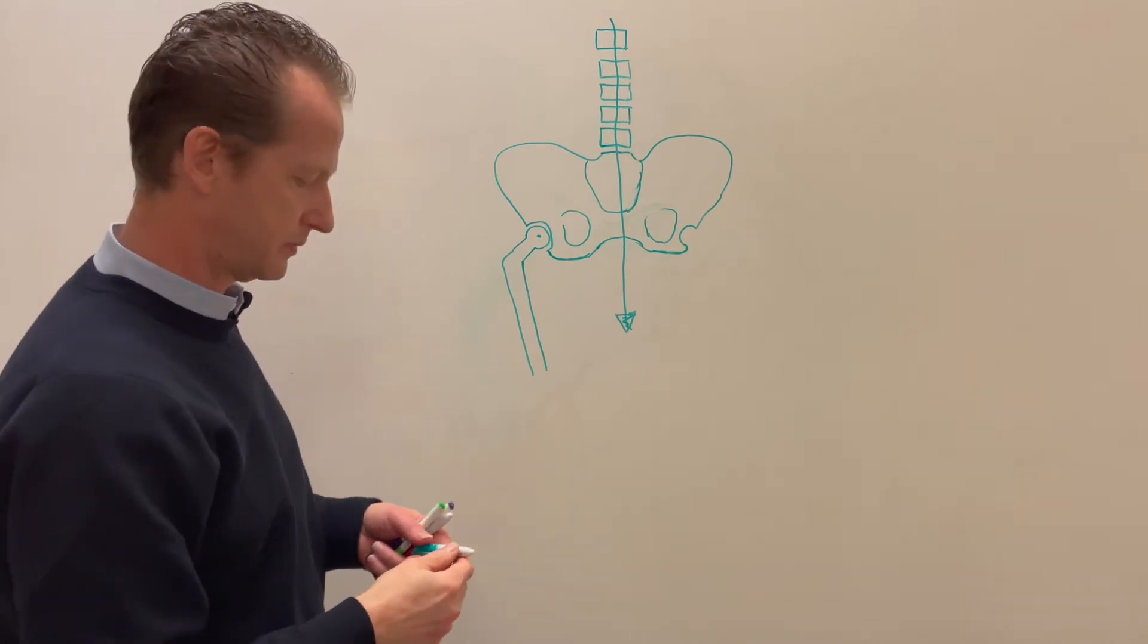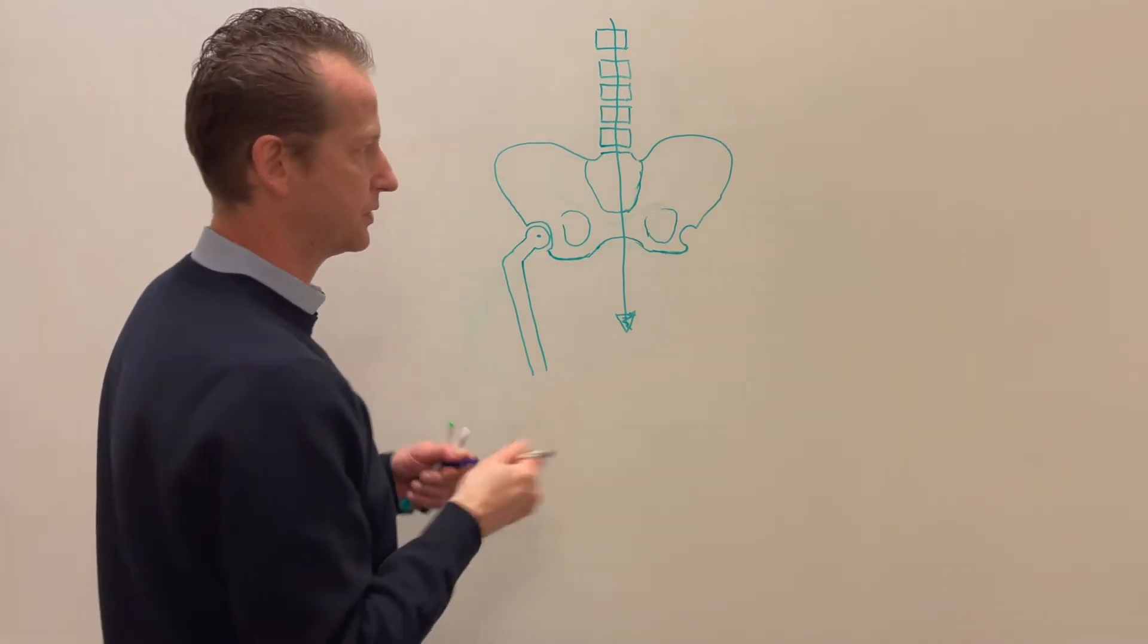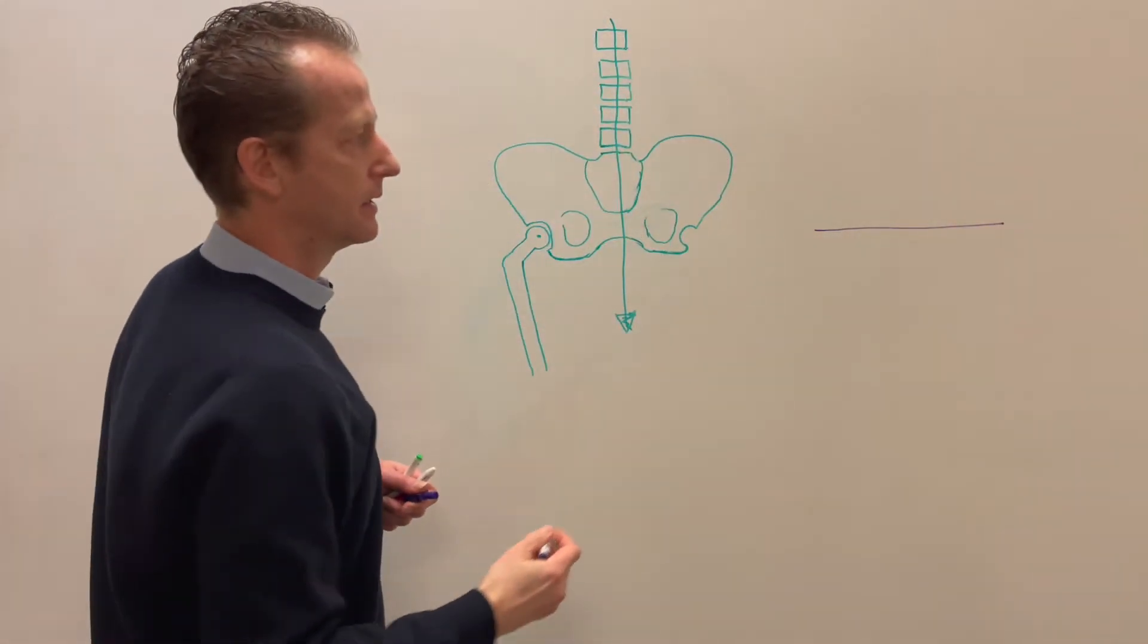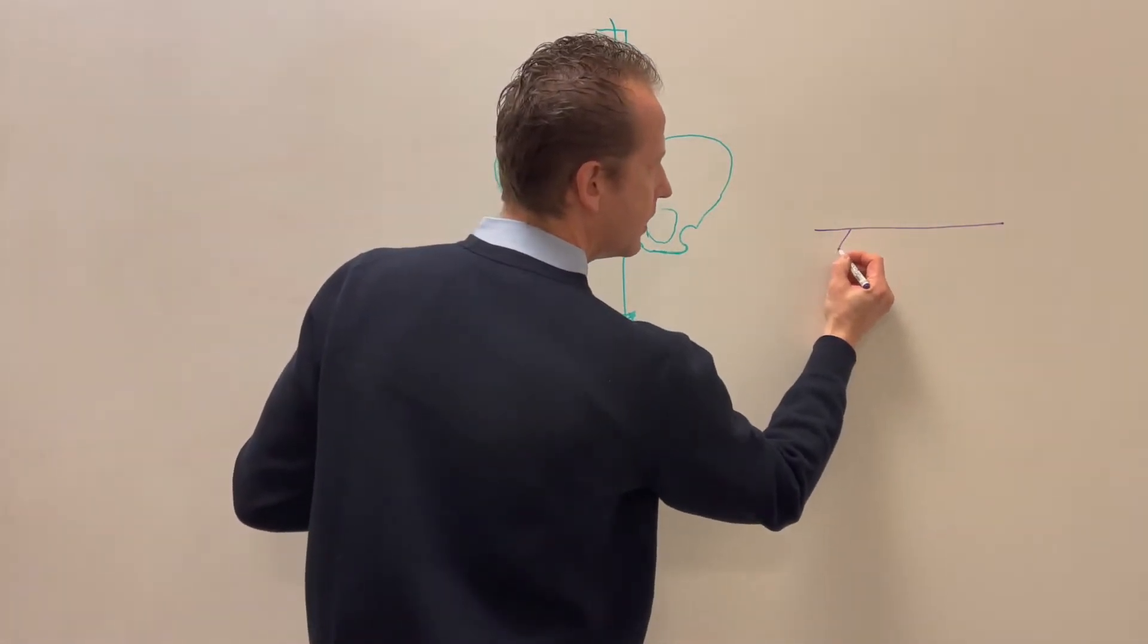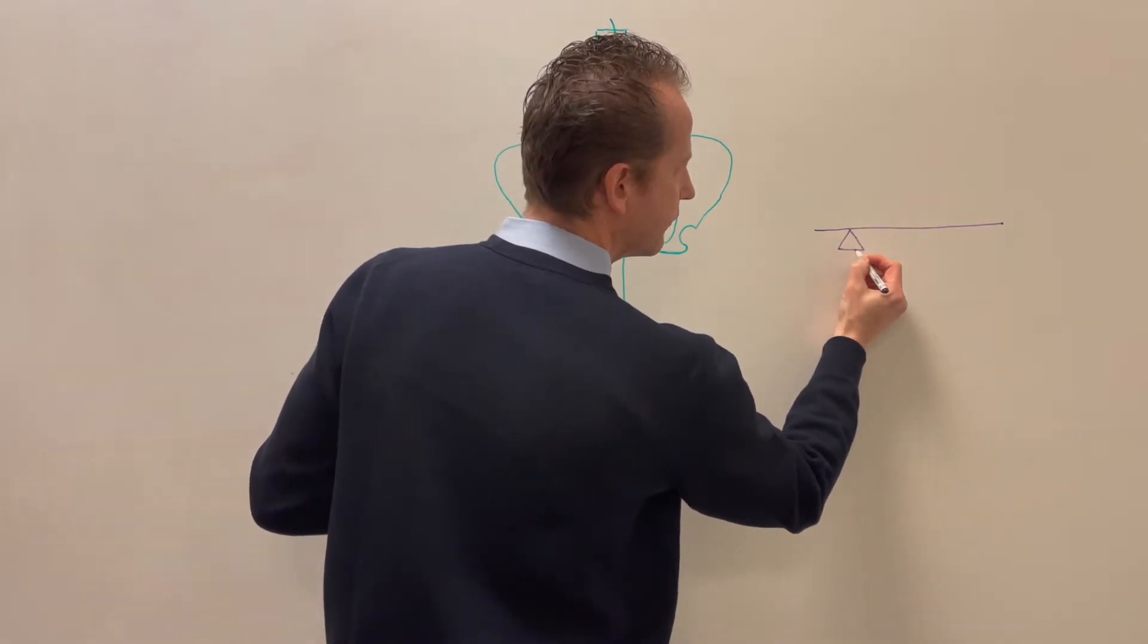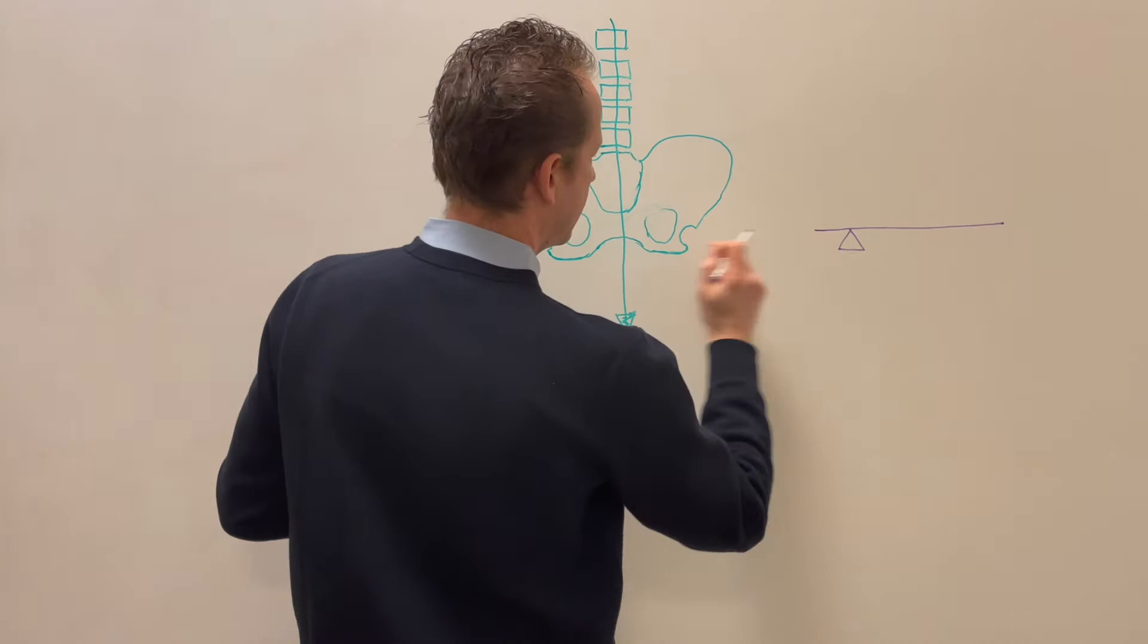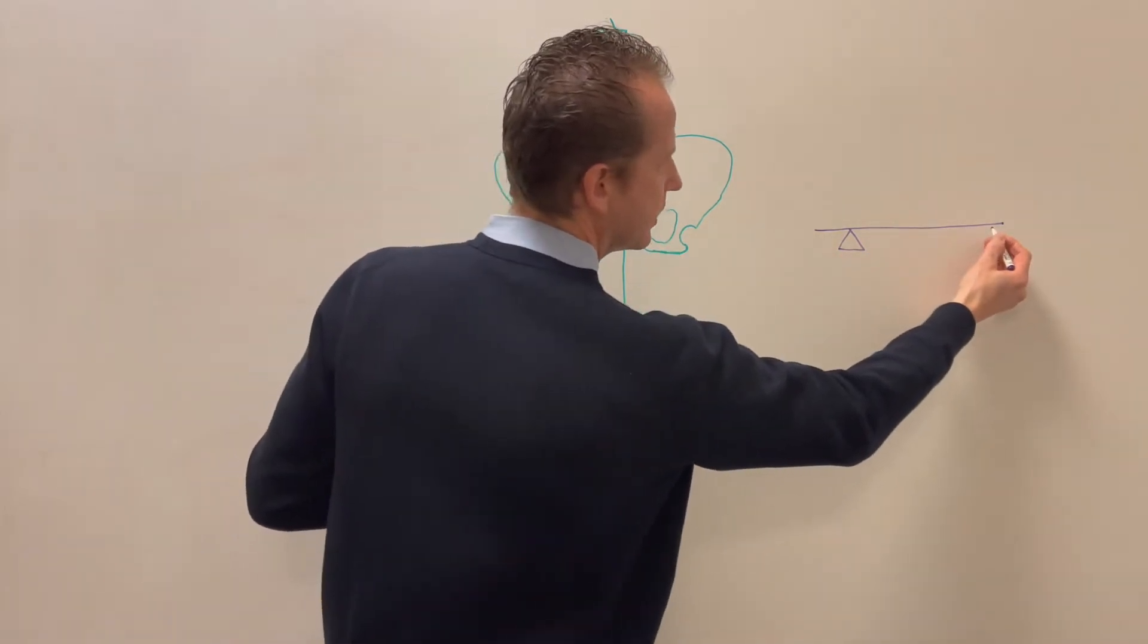Therefore, we have the situation of a seesaw, with fulcrum being the hip joint and the center of mass being far away.